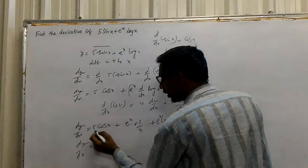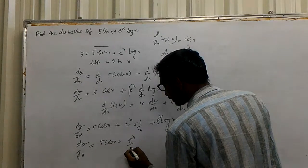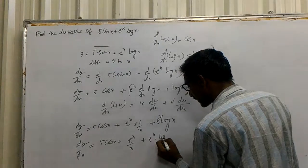dy by dx equals 5 cos x plus e power x by x plus e power x into log x.